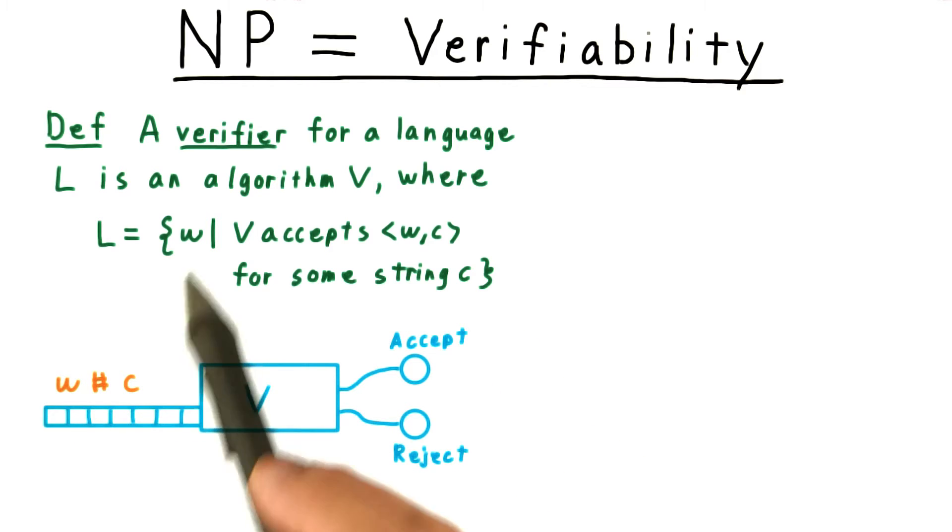In other words, for every W in the language, there's a certificate C that can be paired with W so that V will accept. And for every W not in the language L, there's no such C.